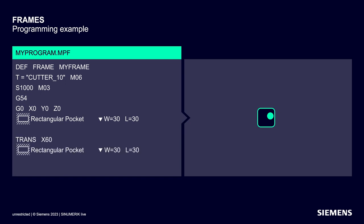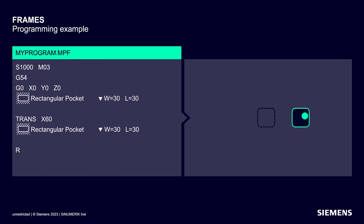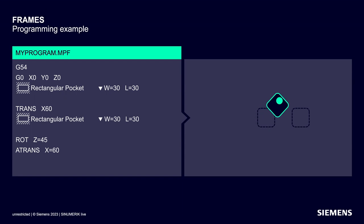Using trans 60, the coordinate system is shifted by 60 millimeters in X to machine the exact same rectangular pocket again. Next comes a rotation. A trans, rote, scale or mirror command without A at the beginning resets the already active programmed frames. Consequently, the rotation takes place again at the coordinate origin. It doesn't matter whether you write rote Z45 or rote Z=45 — CINEMERIC accepts both notations. Additive shifting is then performed with ATRANS, and I'll keep this combination in mind for later.